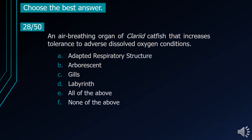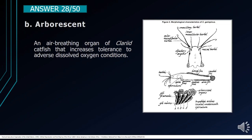Number 28. An air-breathing organ of Clarias catfish that increases tolerance to adverse dissolved oxygen conditions. A. Adapted respiratory structure. B. Arborescent. C. Gills. D. Labyrinth. E. All of the above. F. None of the above. The correct answer is letter B, Arborescent. It is an air-breathing organ of Clarias catfish that increases tolerance to adverse dissolved oxygen conditions.